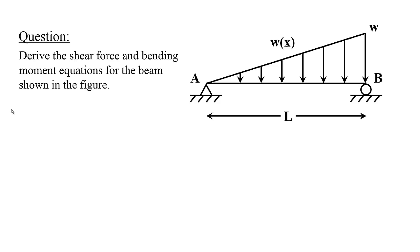And a triangular load having a value of zero at A and a value of W at B. It's a linearly varying load. Let's take a look at the solution.